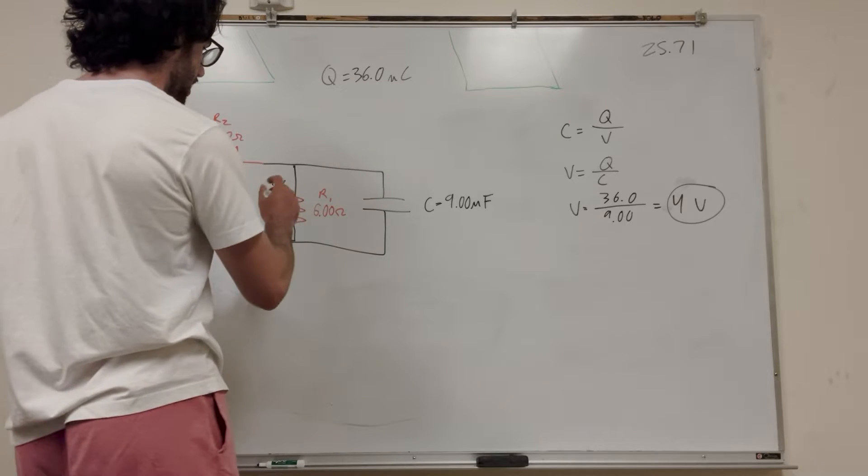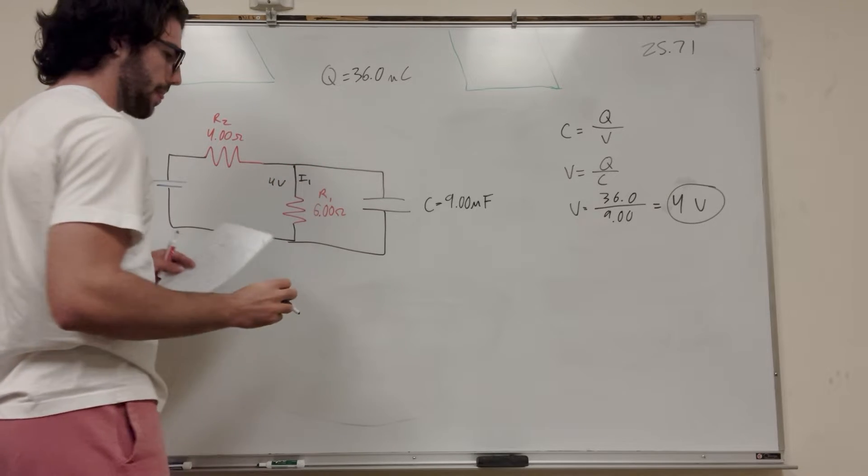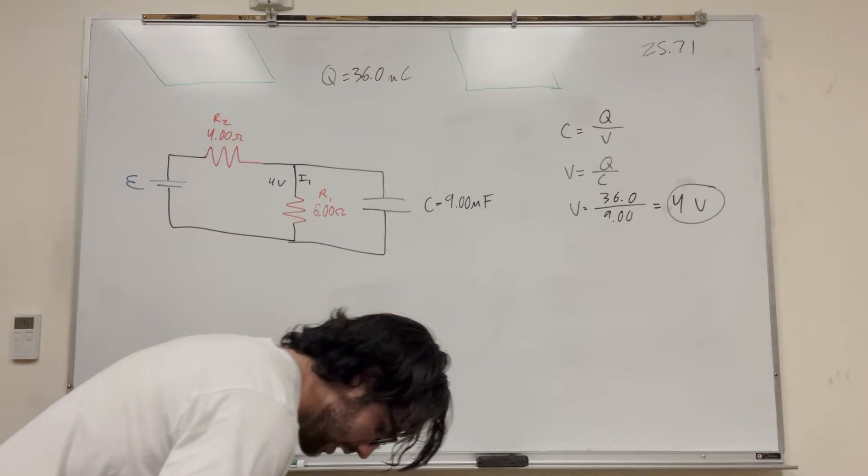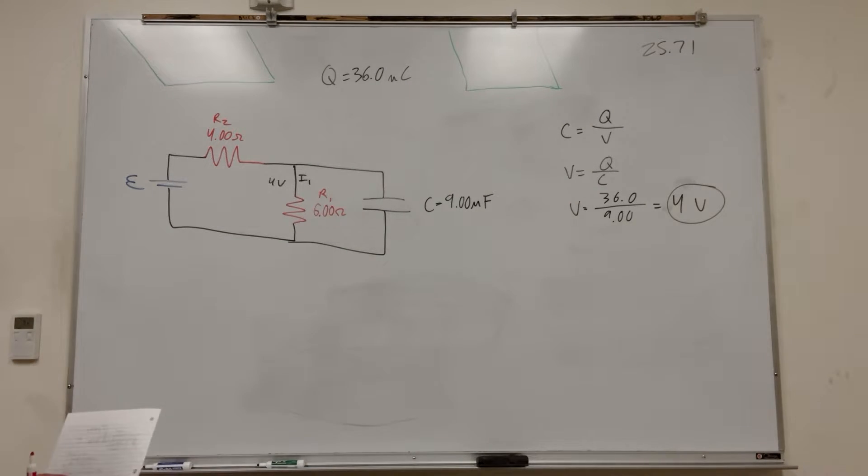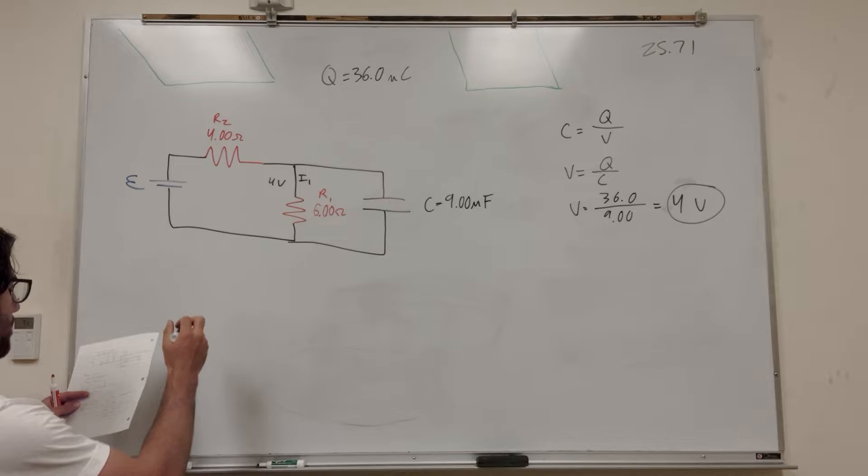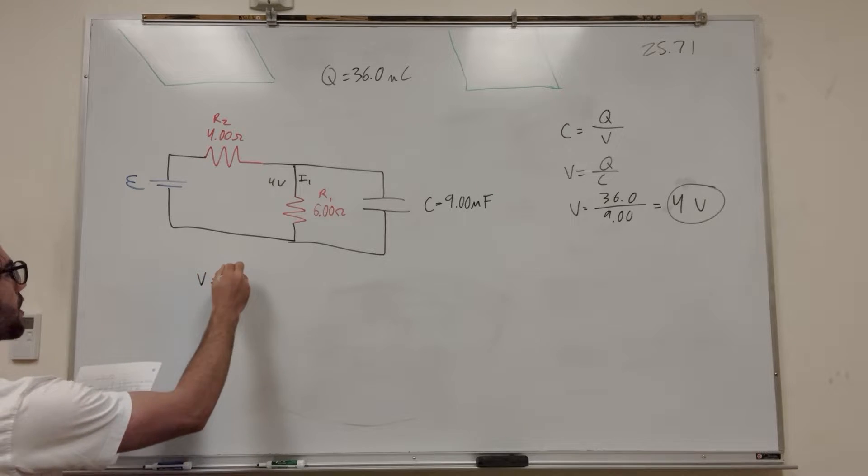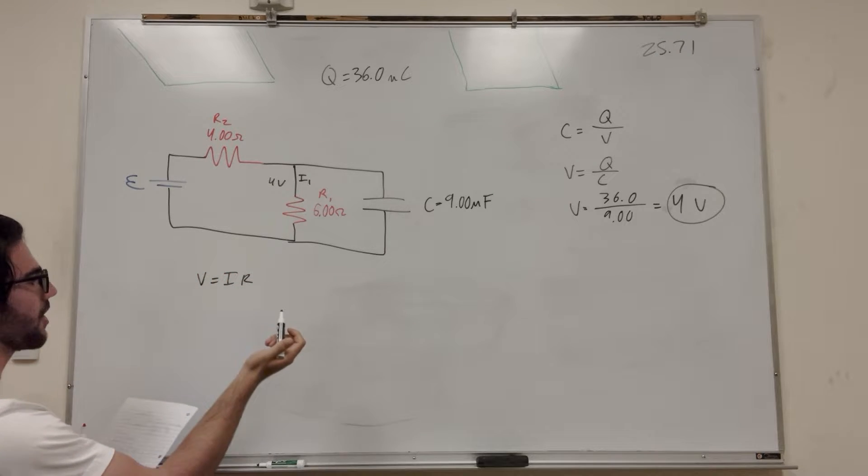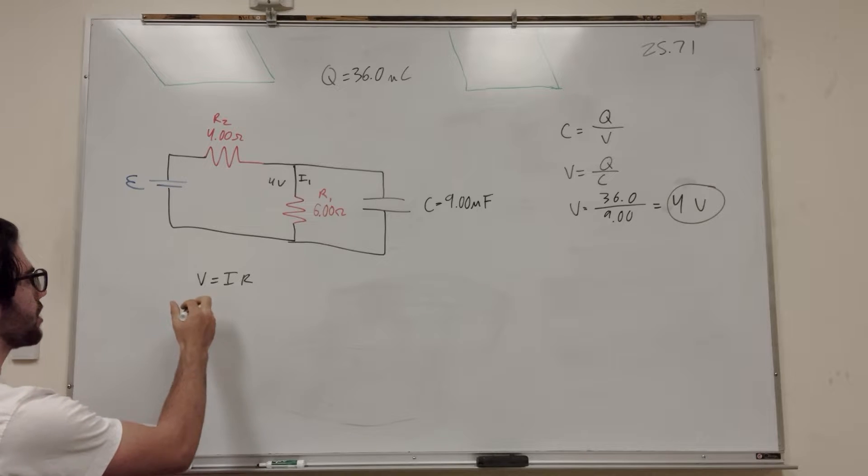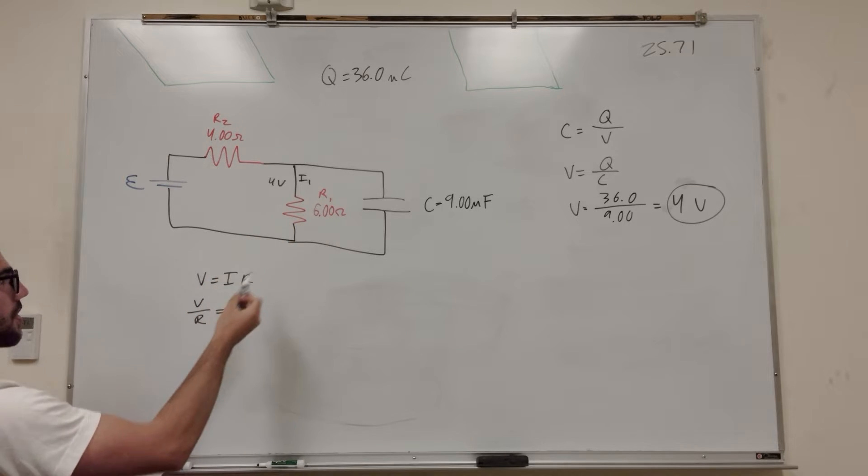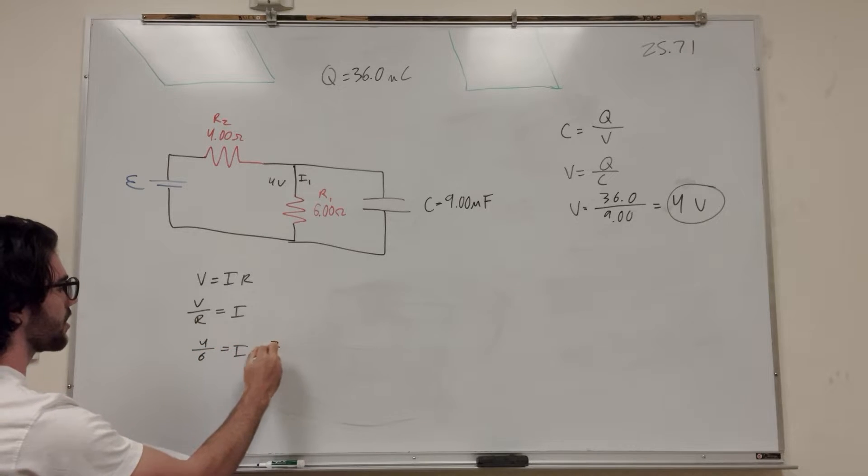We know that voltage is equal to current times resistance, V equals IR. If we're looking for current we're going to say V divided by R equals I. So we know that V here is 4 volts and the resistance is 6 ohms, so it's going to be 4 divided by 6 equals I, which is two-thirds.